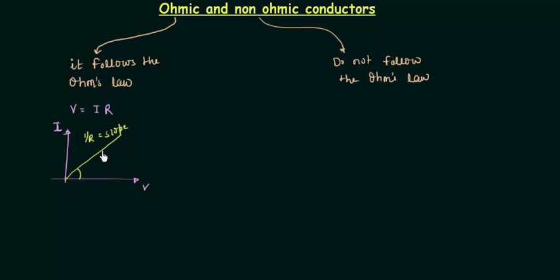The angle made by this line with respect to the voltage axis is theta, and we can find it as tan theta. This is the simple case of conductors which follow Ohm's law.